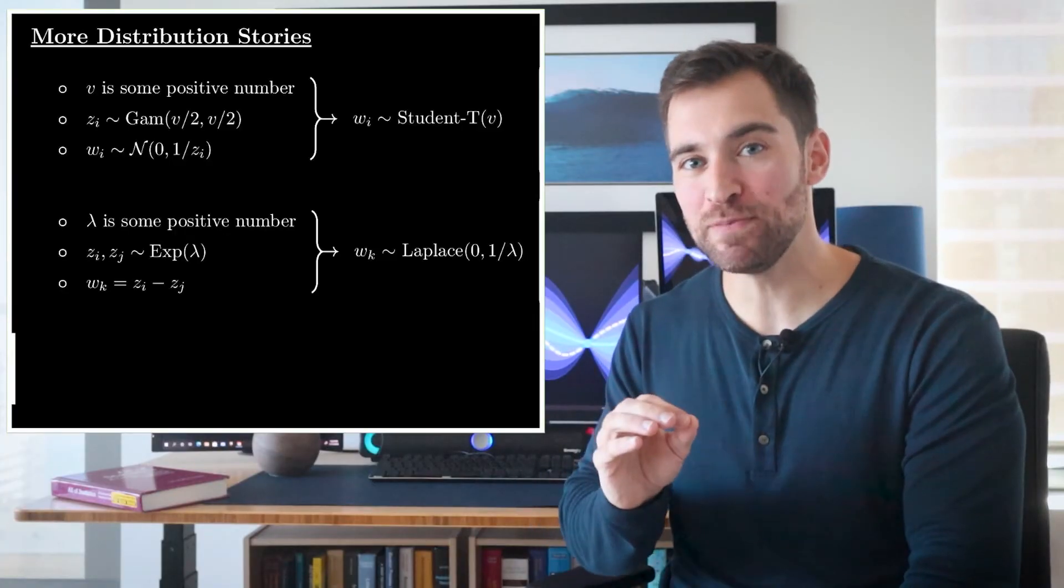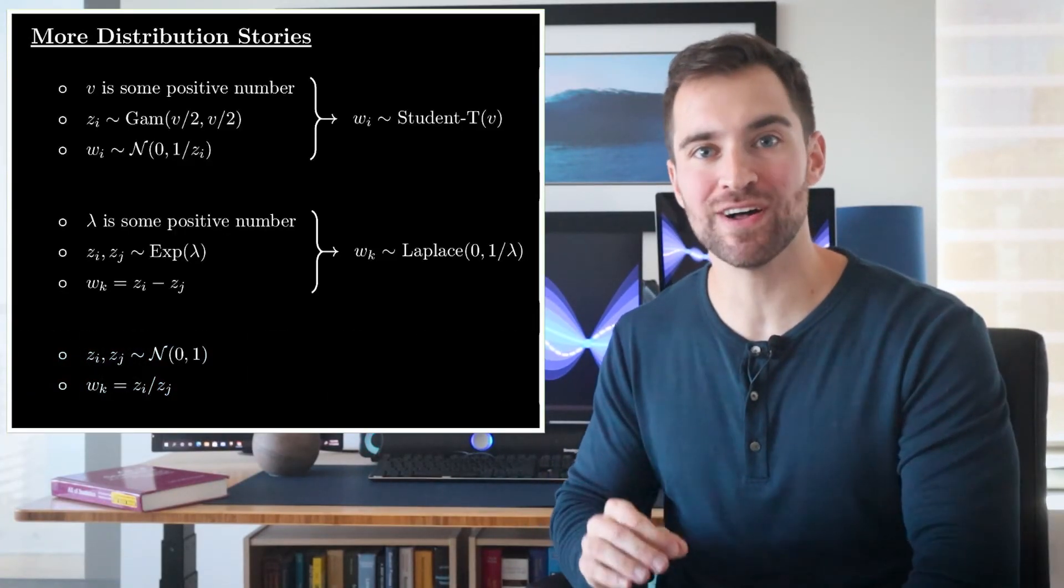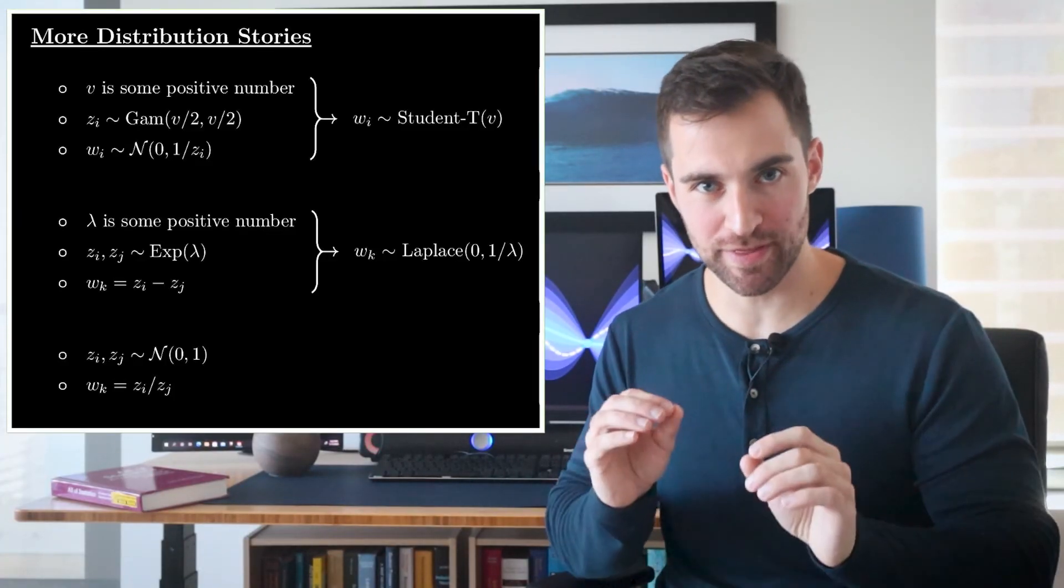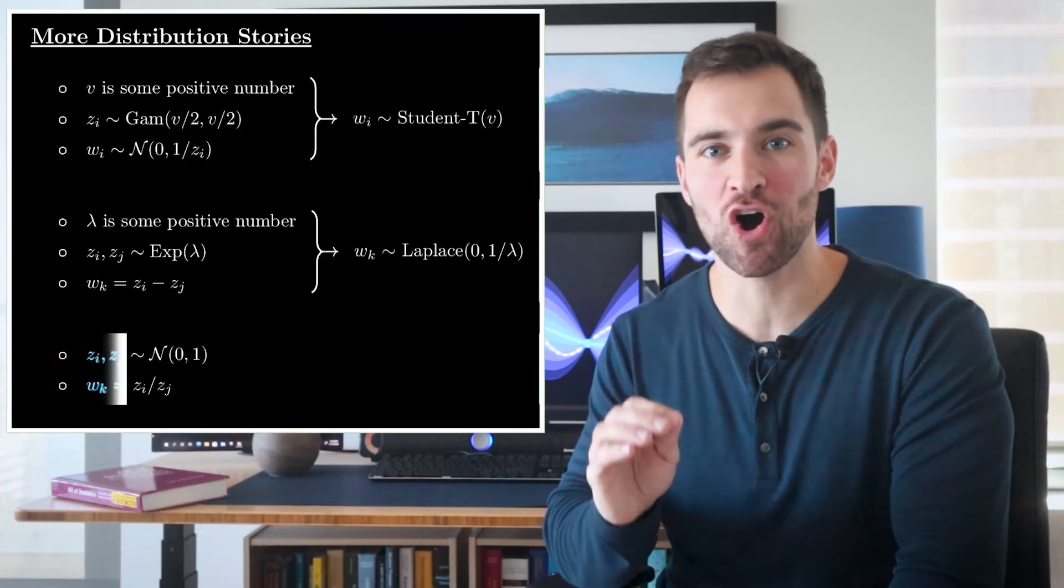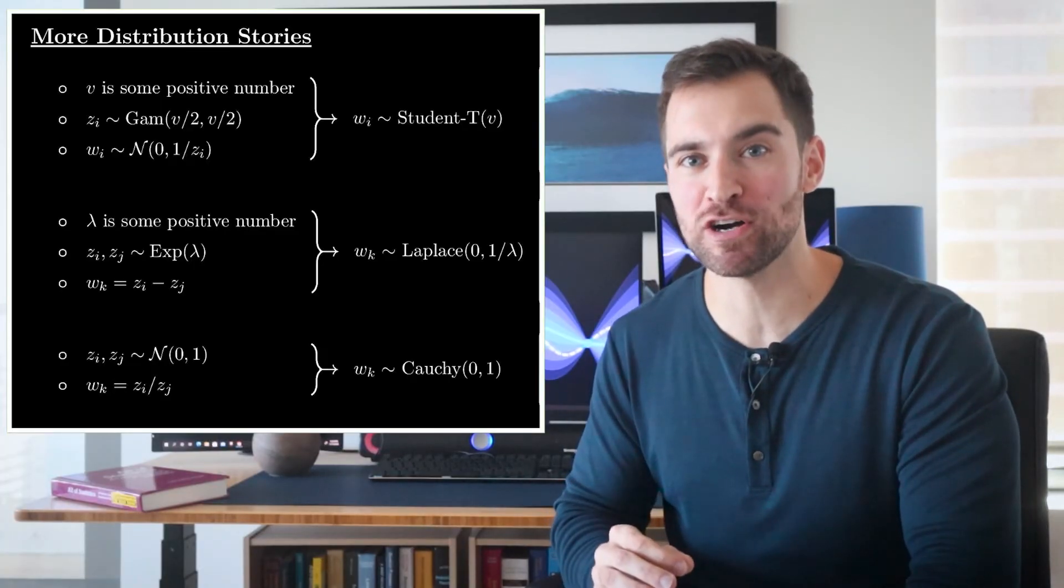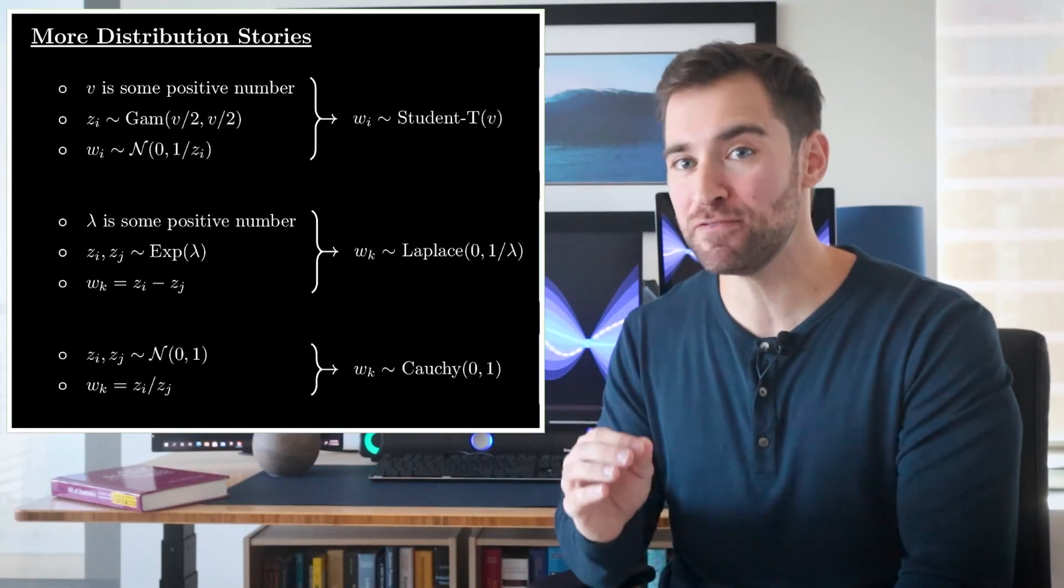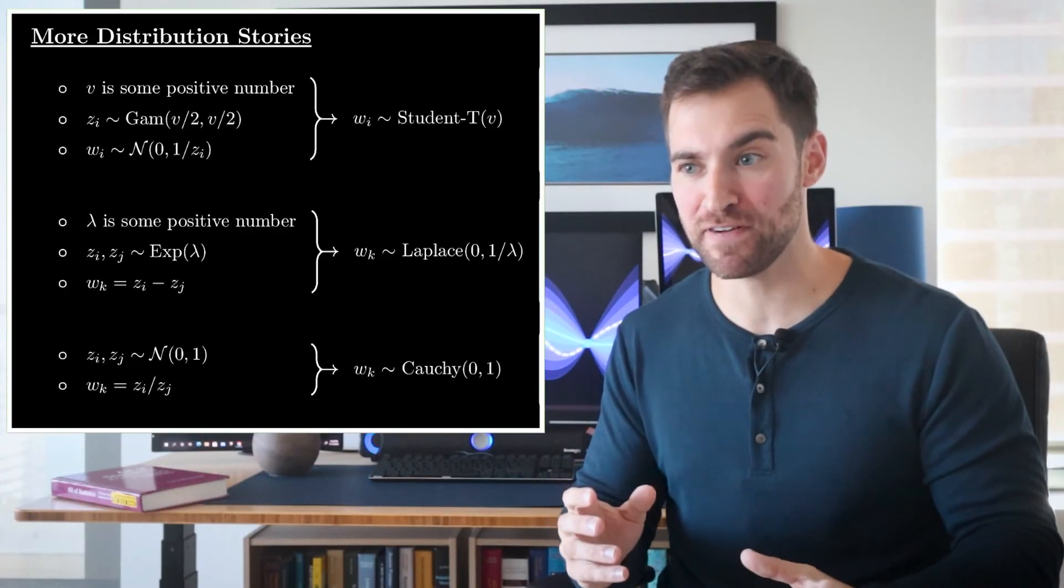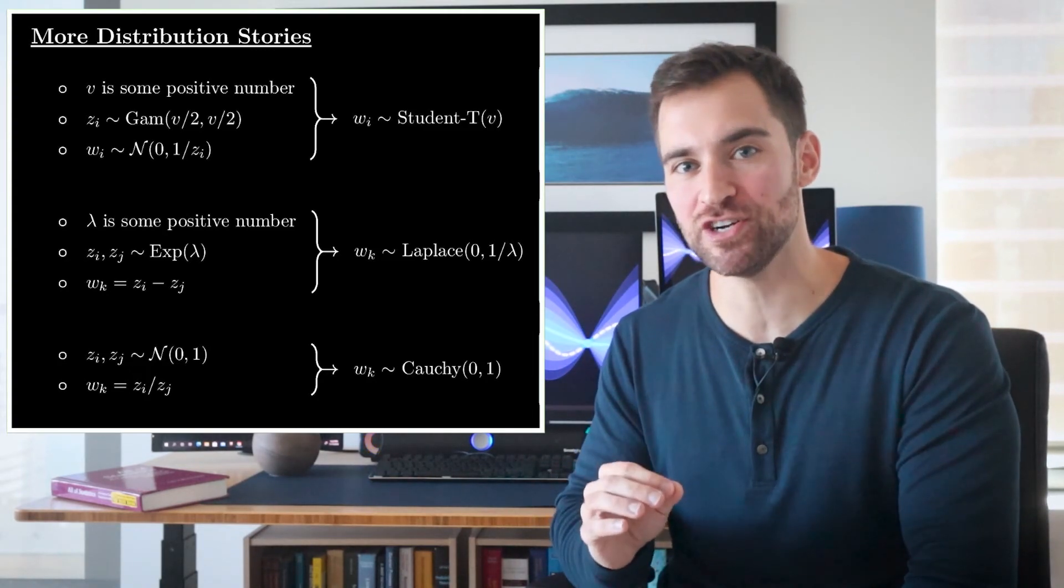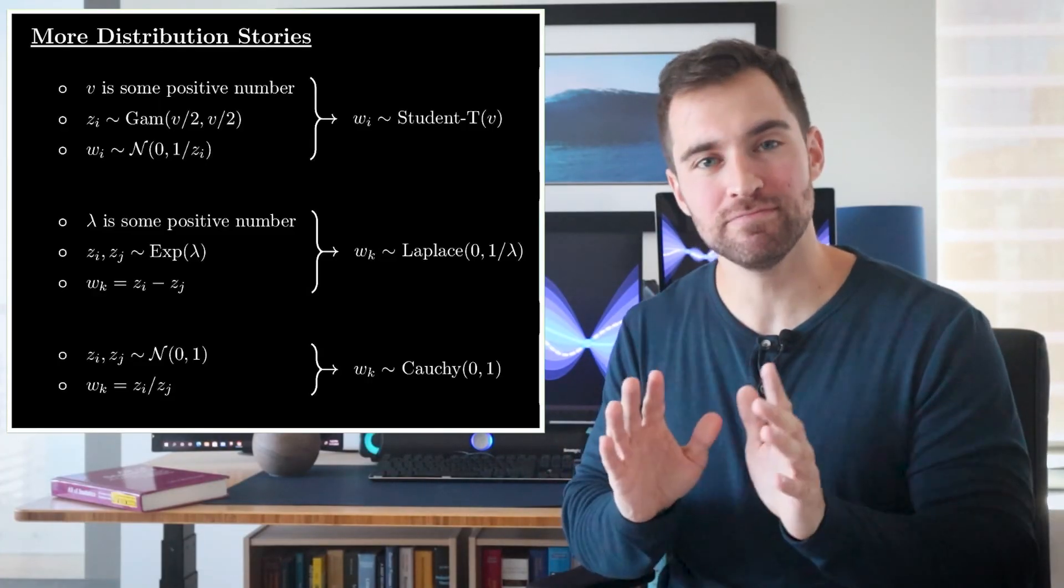Okay, last one. Let's say we sample two values from the standard normal distribution, which we'll call zi and zj. Then let's say wk is their ratio. Well in this case, wk has a Cauchy distribution. Excuse my redundancy, but again, this demystified the Cauchy distribution for me a lot. The Cauchy distribution is weird—it has an undefined mean and variance, which I felt made no sense. But it made a little sense after I realized it's a ratio and the denominator has an expected value of zero. Okay, now I kind of get it.